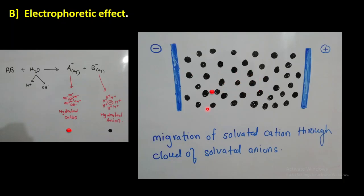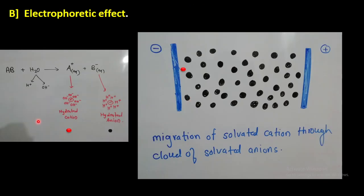So there are two effects: the asymmetry effect and the electrophoretic effect. With the help of these two effects, the interionic attraction theory can explain the variation of equivalent conductance with concentration for strong electrolytes. If you have any questions, please put them in the chat box. Thank you for watching this session.